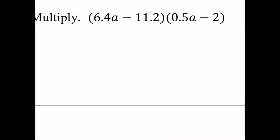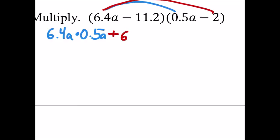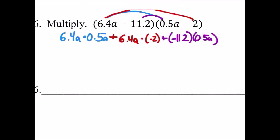Alright, you guys remember multiplying expressions like this? So FOIL method, very good. Let's look at the first, which is 6.4a times 0.5a, and the outers, so we'll add this to 6.4a times a negative 2. The inners, so we'll add this to negative 11.2 times 0.5a.